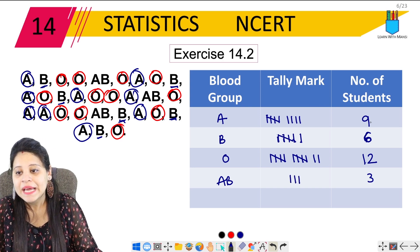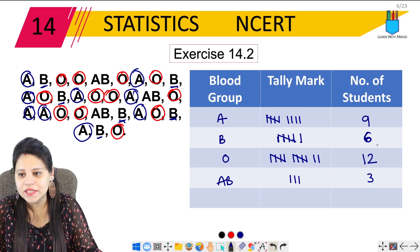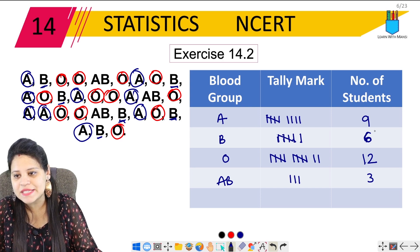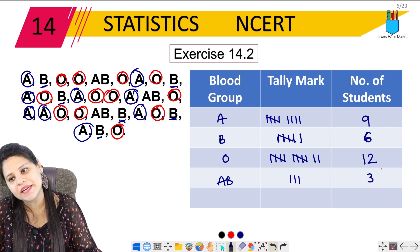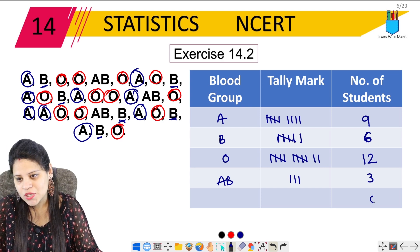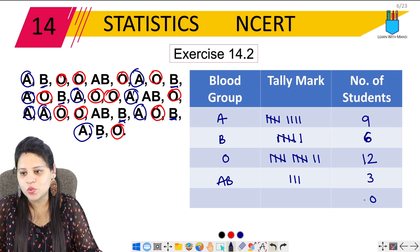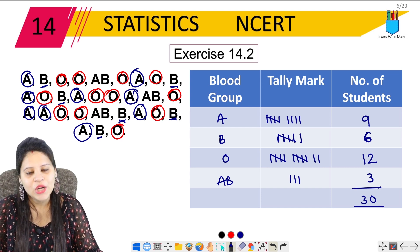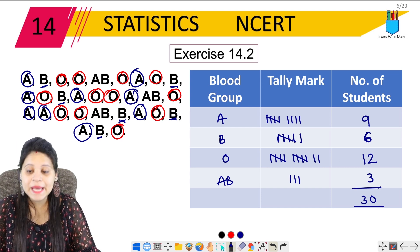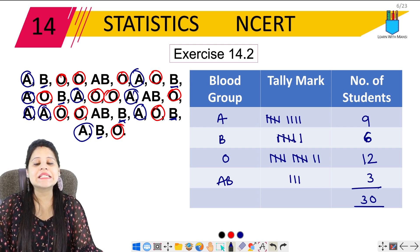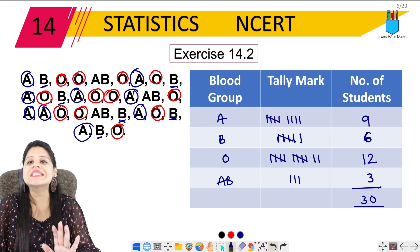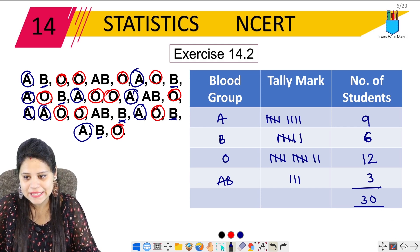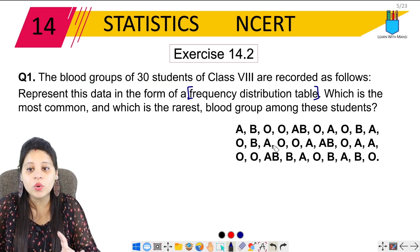Let's do the total: 9 plus 6 plus 12 plus 3 gives us 30. So the total is 30. We can now represent the complete frequency distribution table with this data.